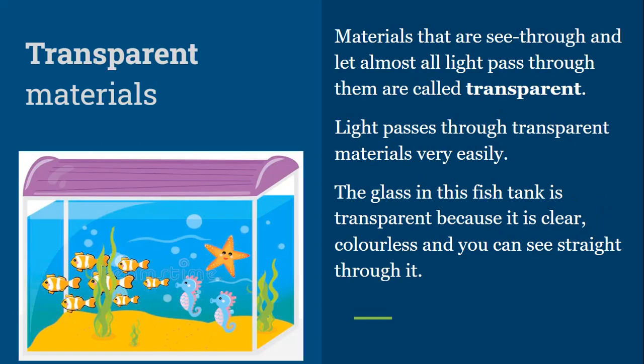Materials through which light can pass completely are called transparent materials. For example, air, water, glass, and cellophane paper are transparent materials. Light passes through transparent materials very easily. The glass in a fish tank is transparent because it is clear, colorless, and you can see straight through it.